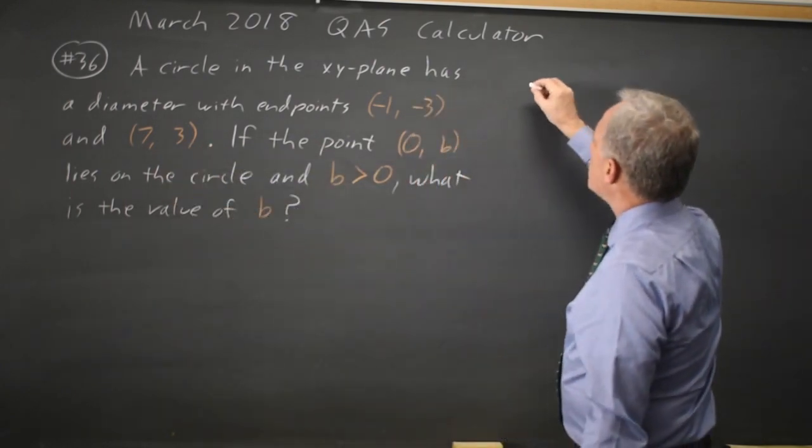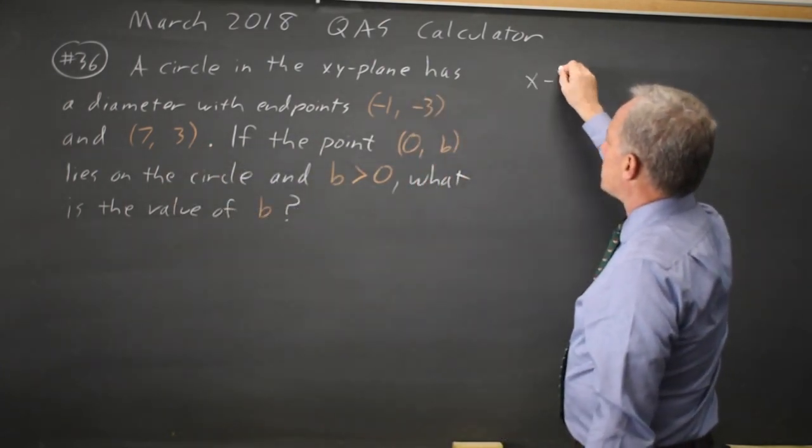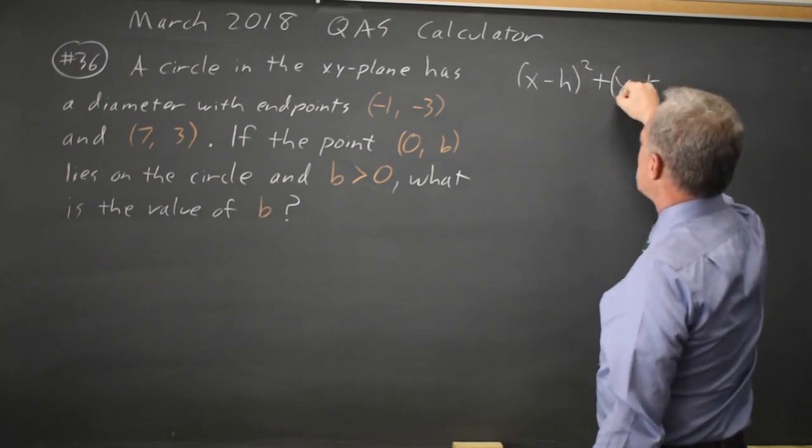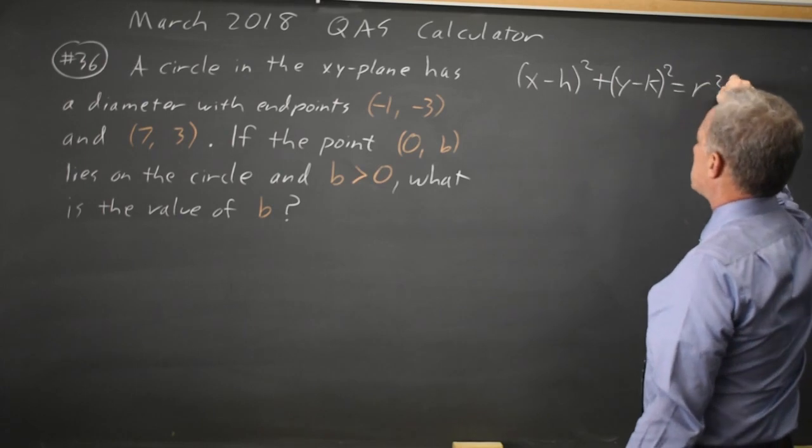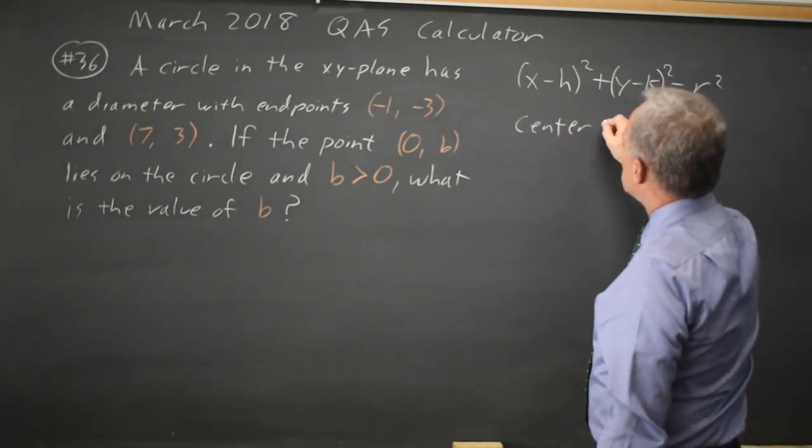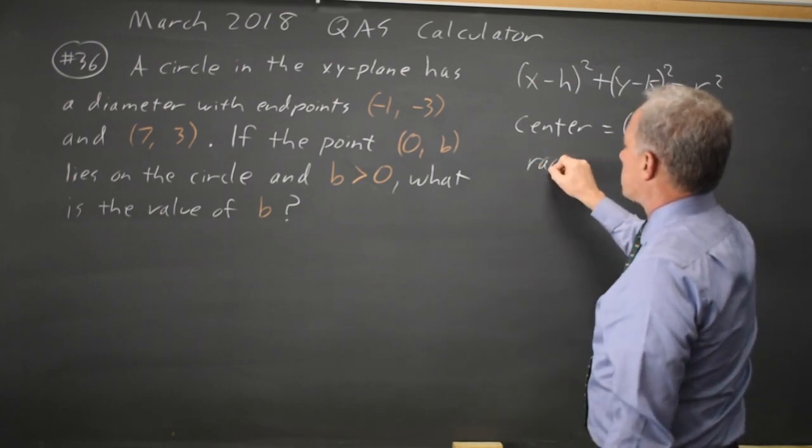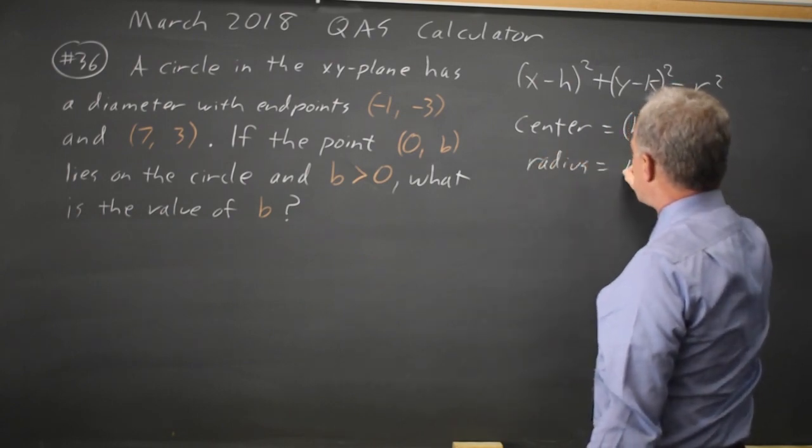So the equation of a circle is x minus h squared plus y minus k squared equals r squared, where the center is the point hk and the radius is equal to r.